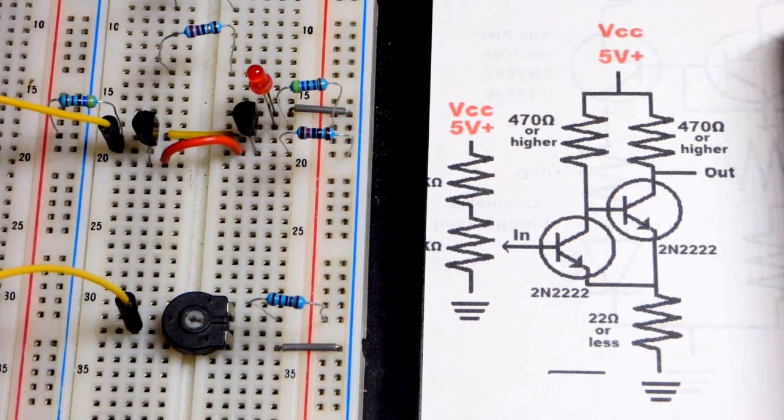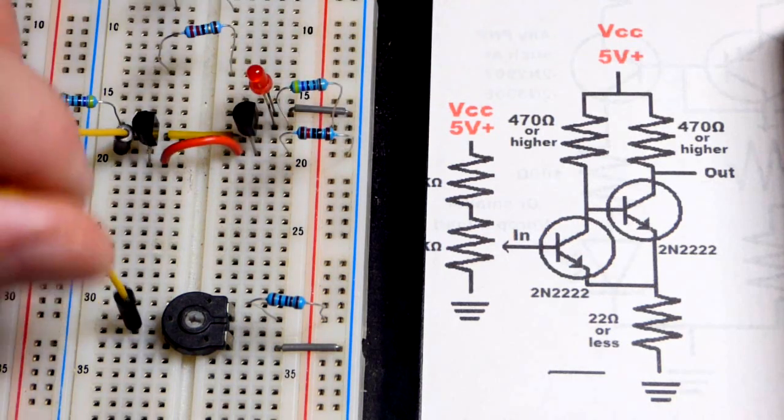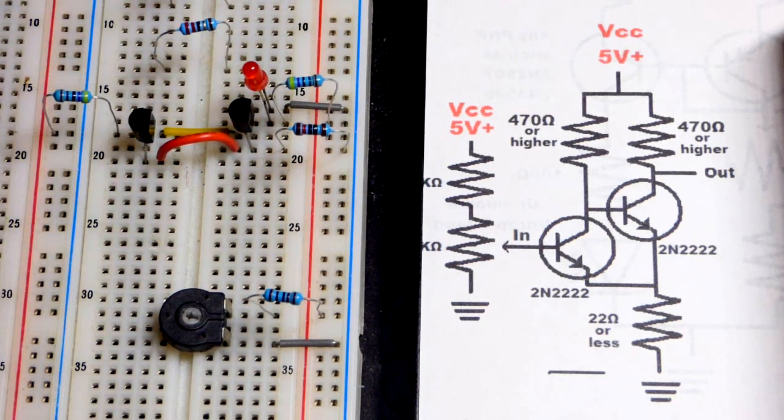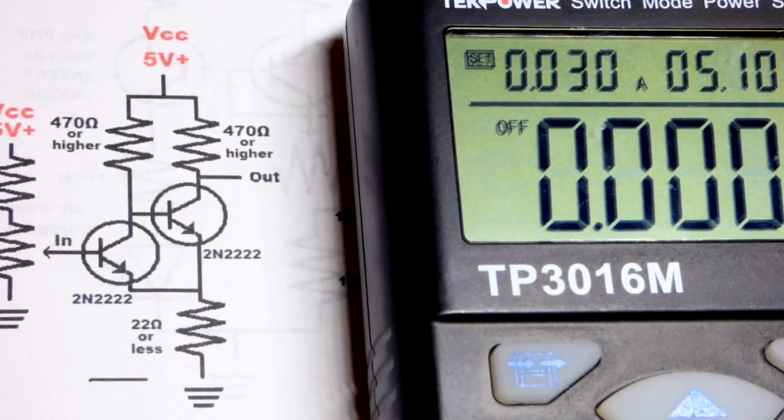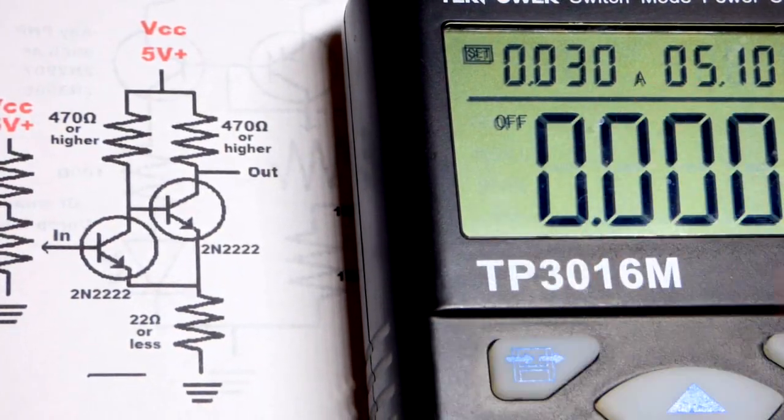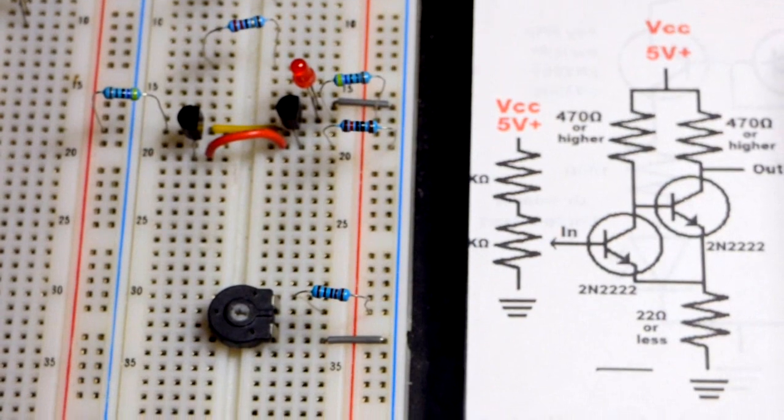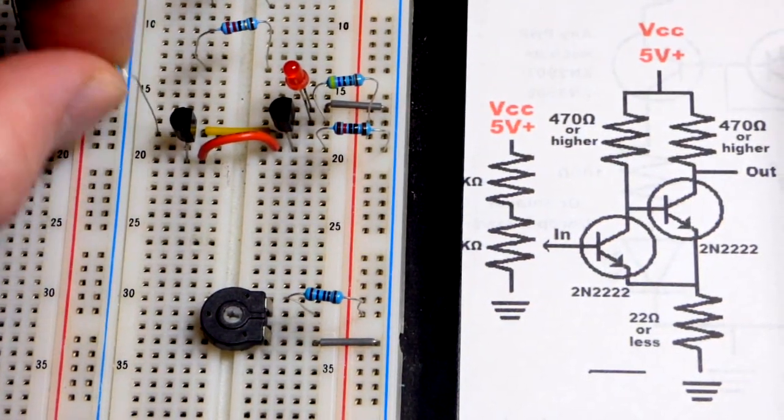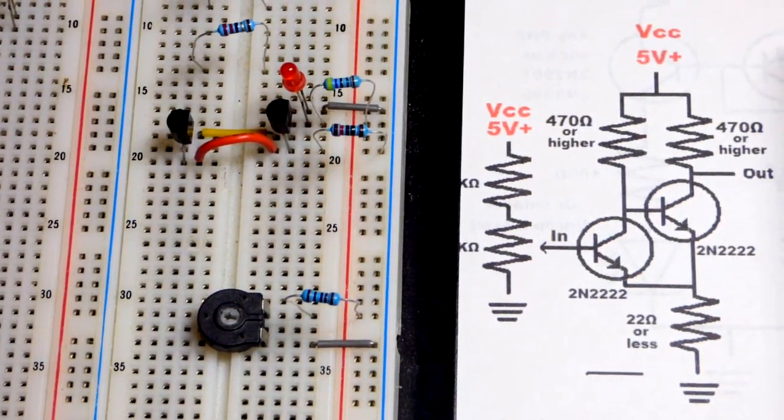So we're going to turn the power supply off. I have it set to five volts right there and limited to 30 milliamps of current. We can look at that right there. And that may have saved some components while I was prototyping this.